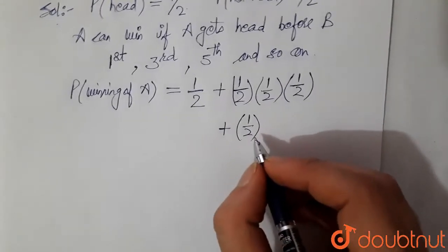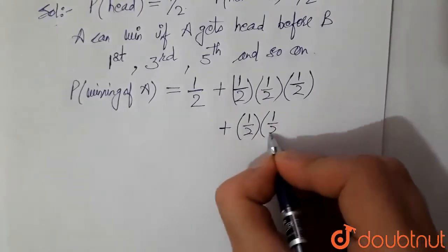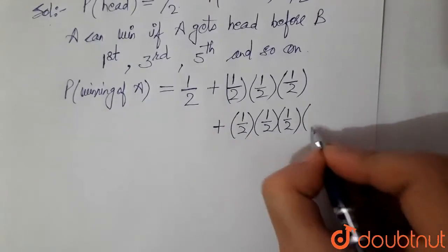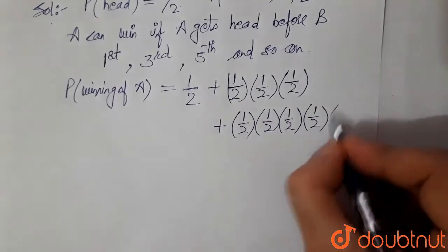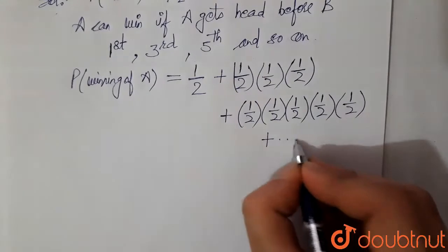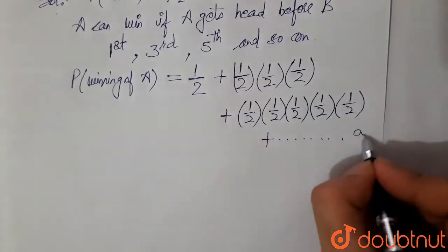First case A fails, second case B fails, third case A fails, fourth case B fails, and fifth case A wins. Okay, so this is a series which will go to infinity.